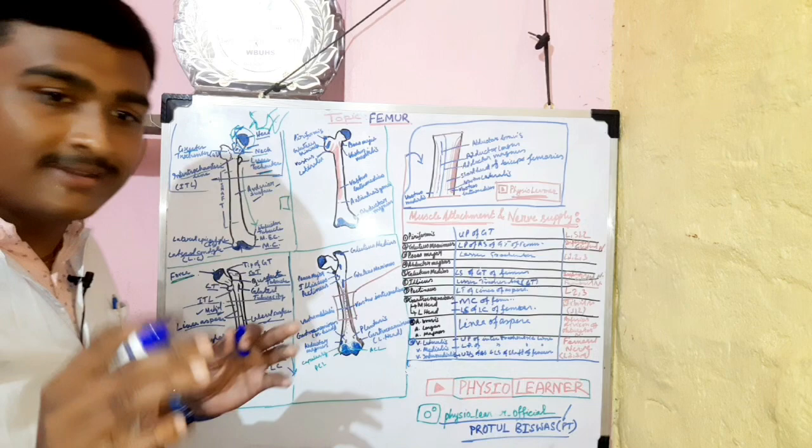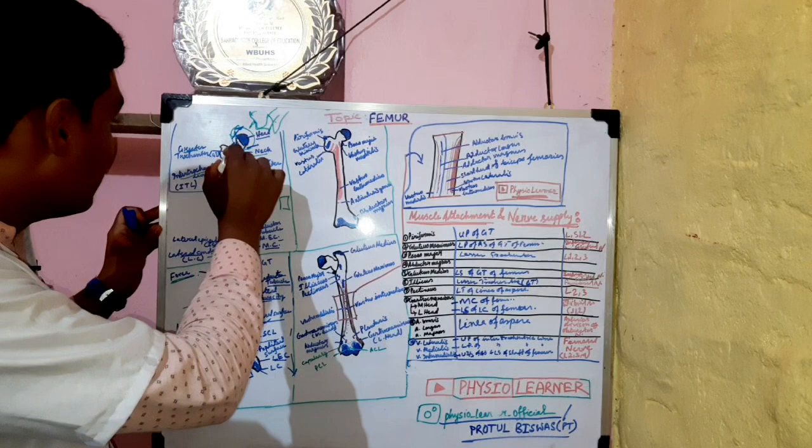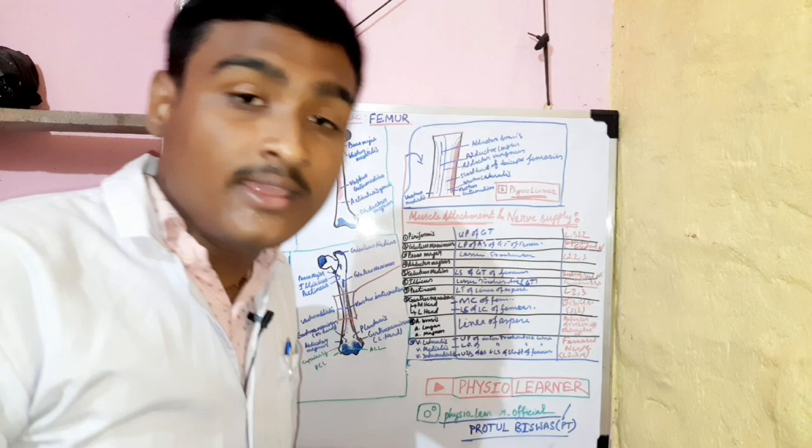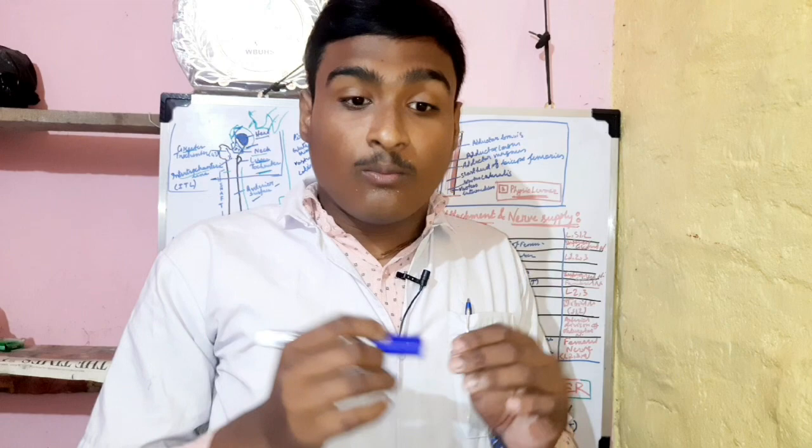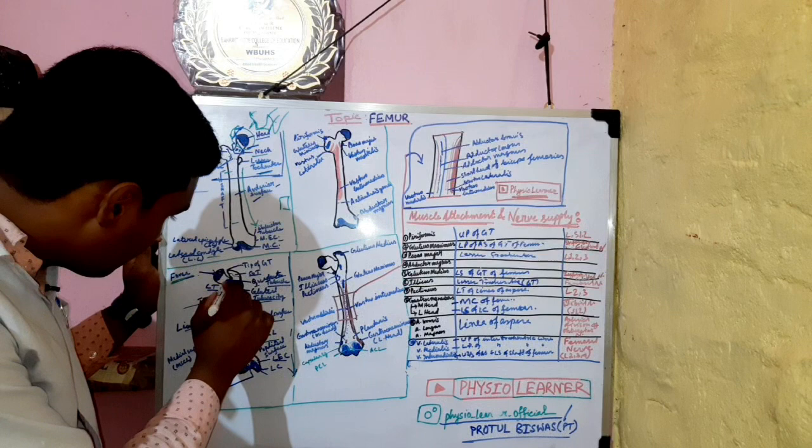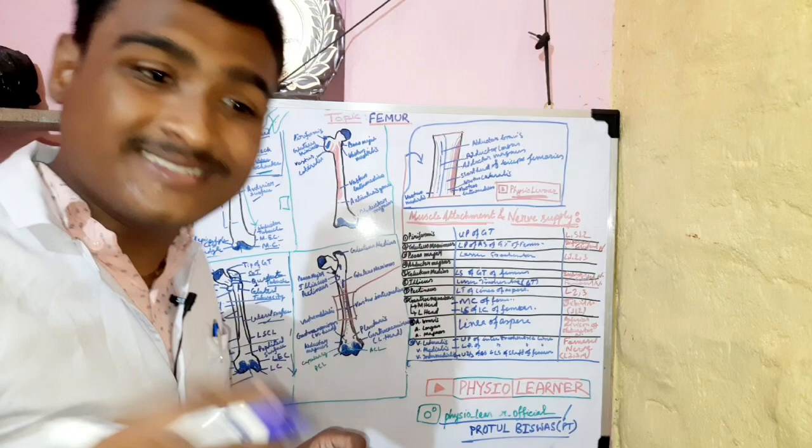The greater trochanter is the most prominent part of the femur and can be easily identified on the bone. There is a large quadrate tubercle here — it is a large quadrilateral prominence because it has a quadrilateral shape. You can call it the quadrate tubercle.